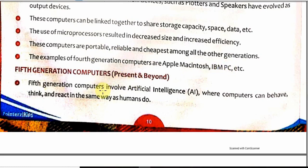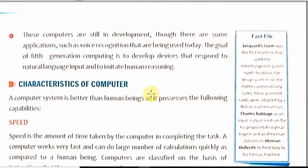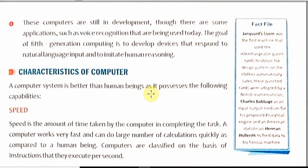We will now see the fifth generation of computers, which are still evolving. Nowadays they use artificial intelligence. Artificial intelligence is the way of thinking of computers, just the way we think — meaning machines can also think like humans. These computers are still in development and it will take a few more years to get fifth generation computers.